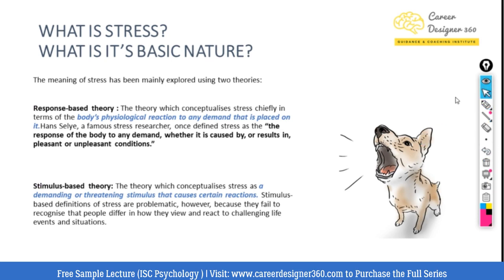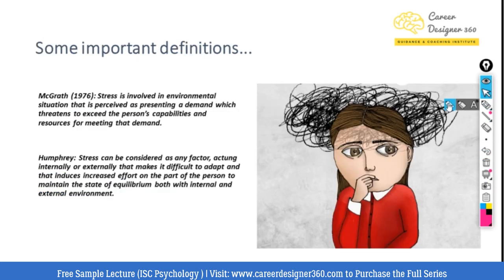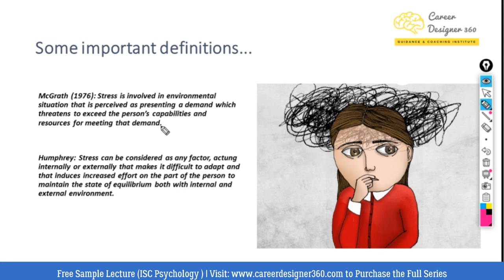There are some important definitions of stress. McGrath in 1976 defined stress as something involving an environmental situation that is perceived as presenting a demand which threatens to exceed the person's capabilities and resources for meeting that demand. He is essentially explaining stress as a demanding environmental situation that threatens the individual to increase his capabilities to meet that demand.